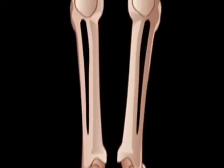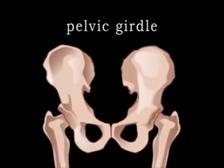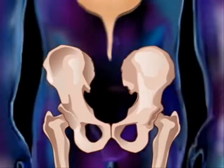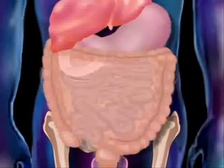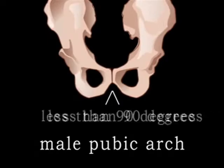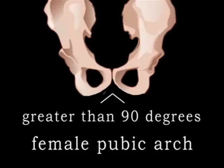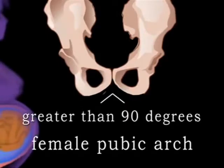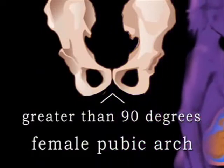The bones of the lower extremities, or legs, are connected to the axial skeleton via the pelvic girdle, which is formed by the two hip bones. It protects the bladder, reproductive organs, lower colon, and rectum. In the male, the pubic arch of the pelvis is less than 90 degrees wide; in the female, greater than 90 degrees. This difference in width is necessary for the female pelvis to accommodate childbirth.